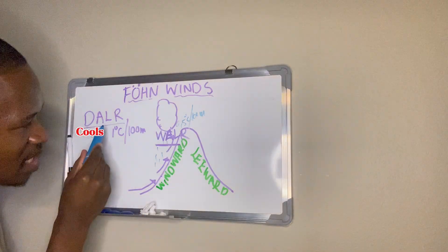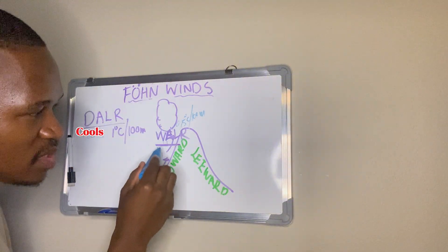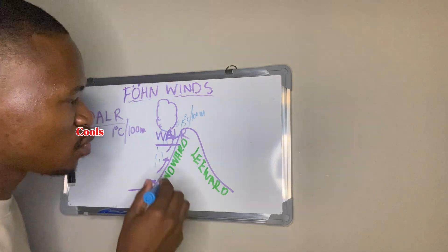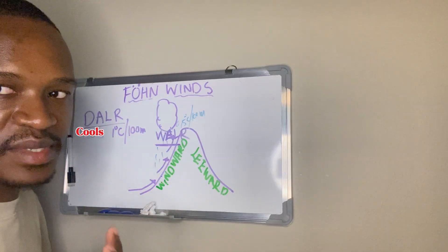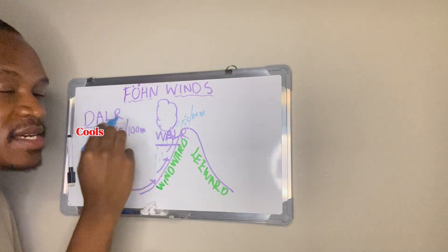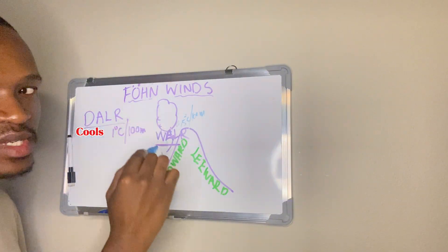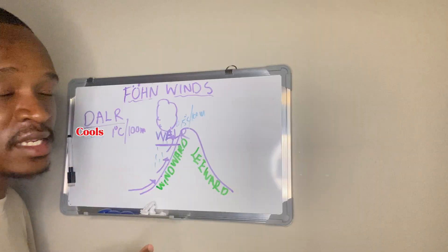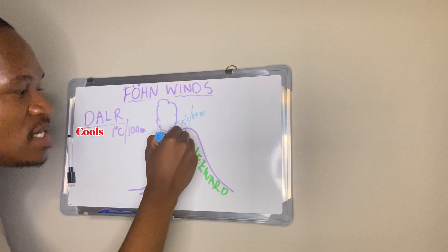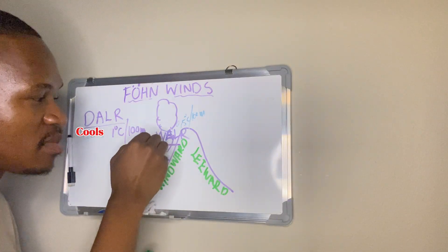Initially we have a dry adiabatic lapse rate as air cools at 1 degree Celsius for every 100 meters. But when the air reaches its dew-point temperature and condensation starts, we get the wet adiabatic lapse rate — the air is now saturated and cools at 0.5 degrees Celsius for every 100 meters. Condensation happens, clouds form, and clouds bring about precipitation.